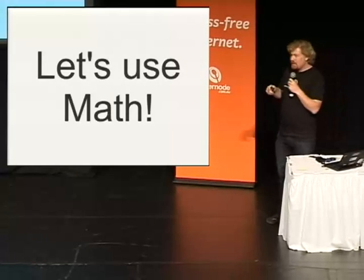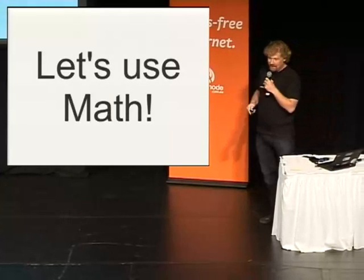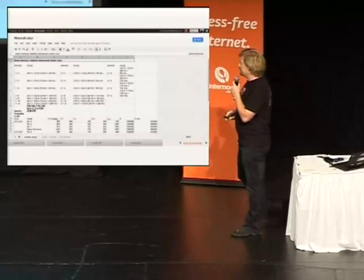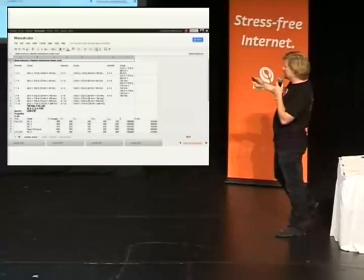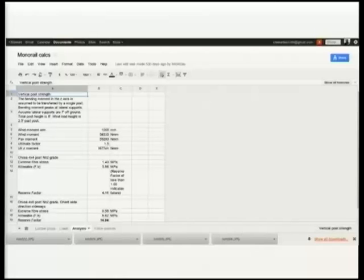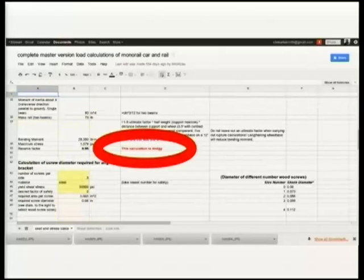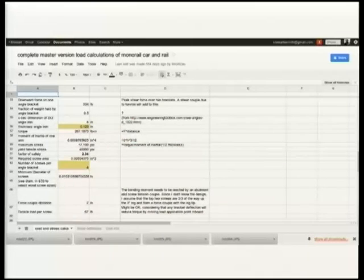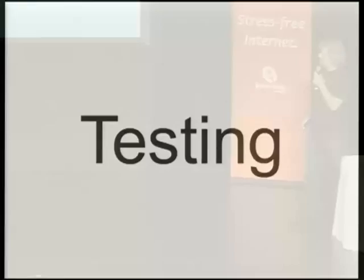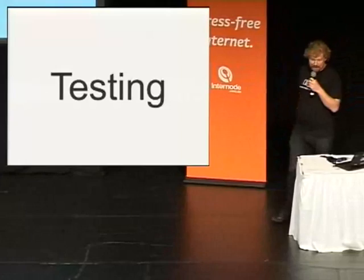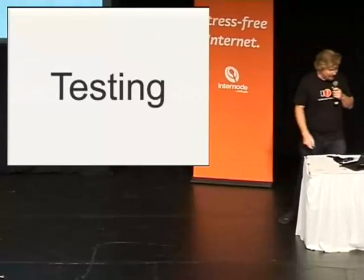Let's use math. The benefit of having engineers — including structural, aerospace, and the like — is we could do a whole bunch of maths on wood properties and how this will fit together, and what loads would be under various winds and people leaning out the side and doing all sorts of silly things. We had a whole bunch of fun — of course, this calculation is dodgy — but it was absolutely perfect to make sure that anyone killing themselves would be their own damn fault, not ours.